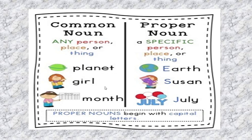Similarly, if I say I am a girl, I can have any name. But when I say my name is Suzanne, I am telling you my particular name, so the word Suzanne becomes a proper noun. In the same way, when you say this is a month going on, the word month is a common noun because it can be any month. But when you say the name of the present month is July, you are actually providing a specific name to your month, so the word July becomes your proper noun.